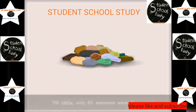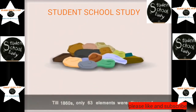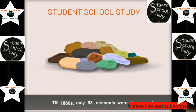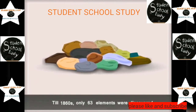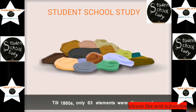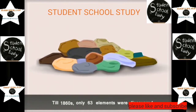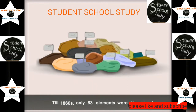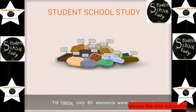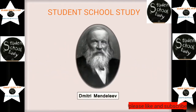Till the 1860s, only 63 elements were discovered. In order to understand the properties of these elements, the scientists of that time tried to classify the elements on the basis of similarities in their properties.